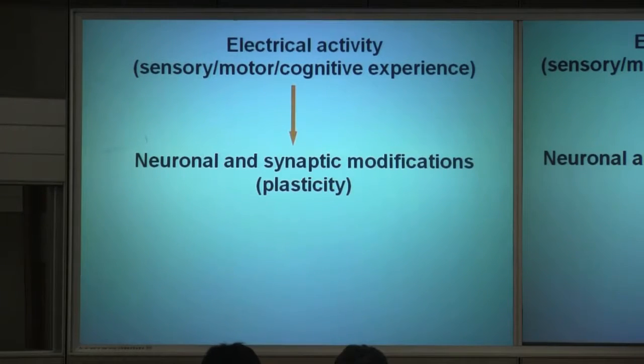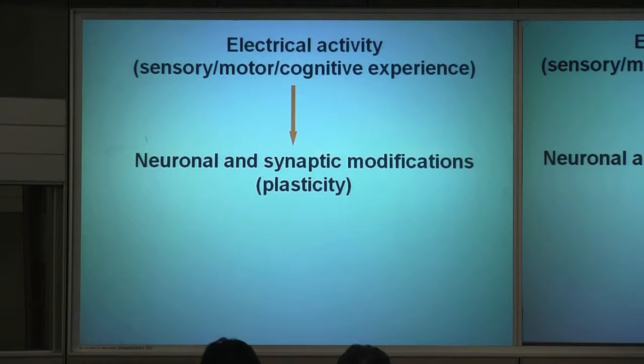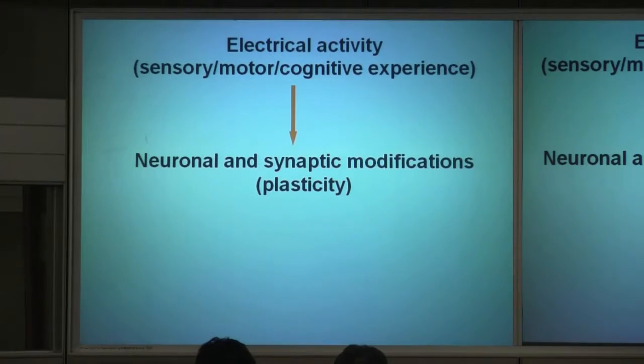These electrical currents associated with all activity — sensory, motor, cognitive activity — will have an influence on the brain structure. By having this activity, or experience, we can imagine the experiences associated with an experiment produce all this electrical activity. That activity can change the structure of the neurons and the synapse. And that we call plasticity.